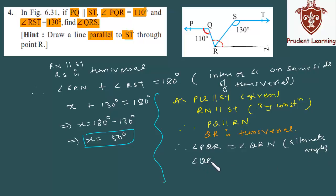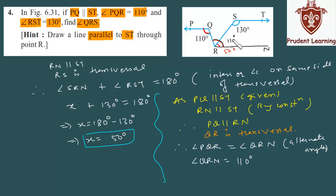Angle QRN equals 110 degrees. This whole angle QRN is 110 degrees, out of which the part SRN is X, which is 50 degrees. So this remaining angle QRS will be the whole angle minus that part, which is 110 degrees minus 50 degrees.